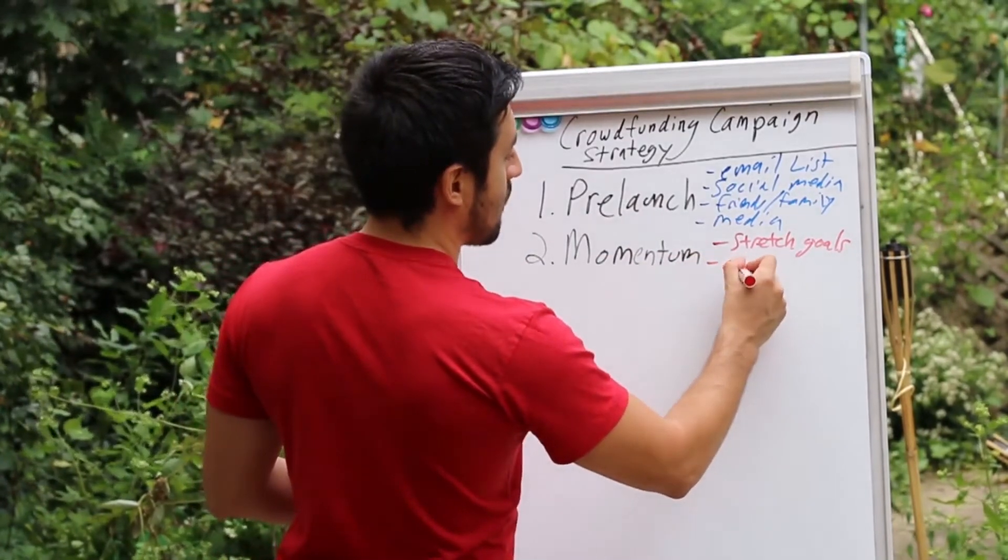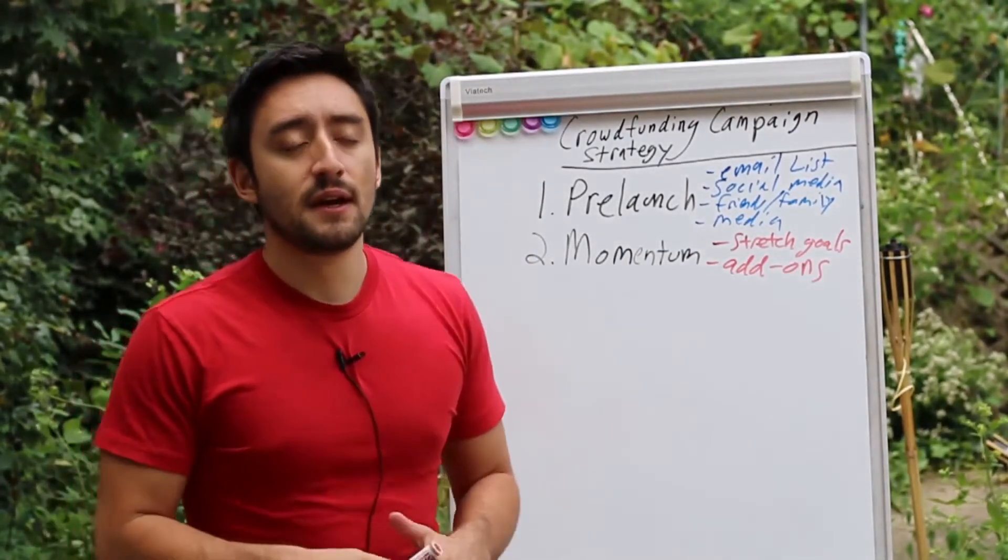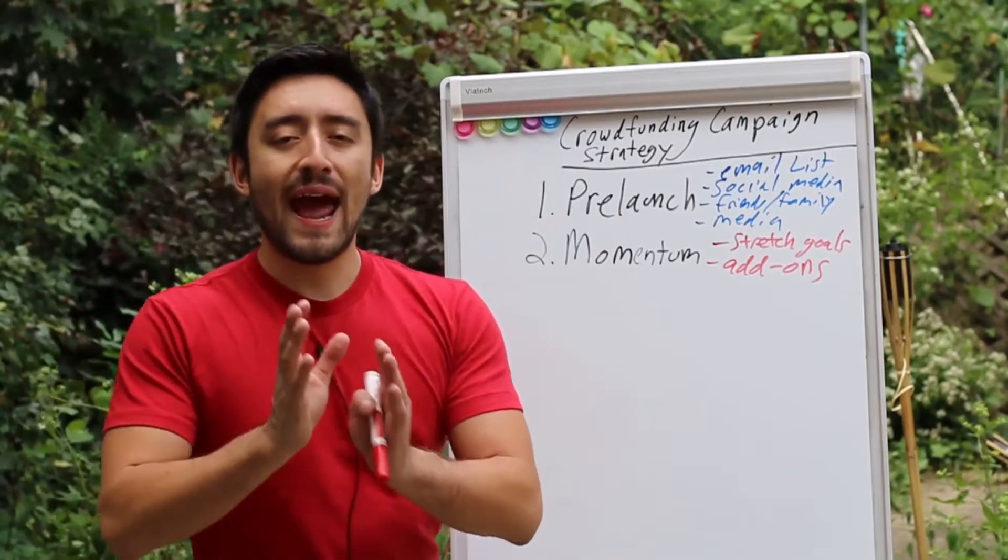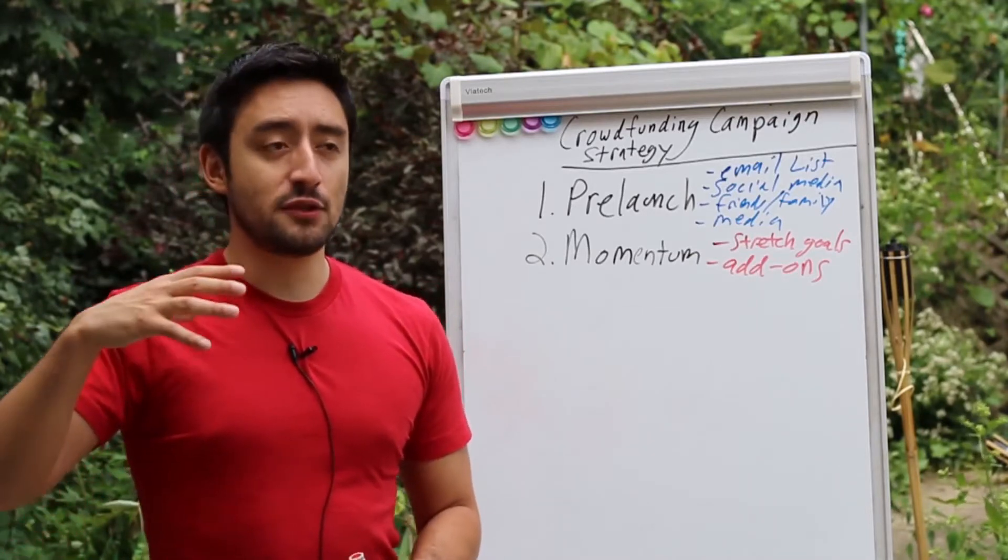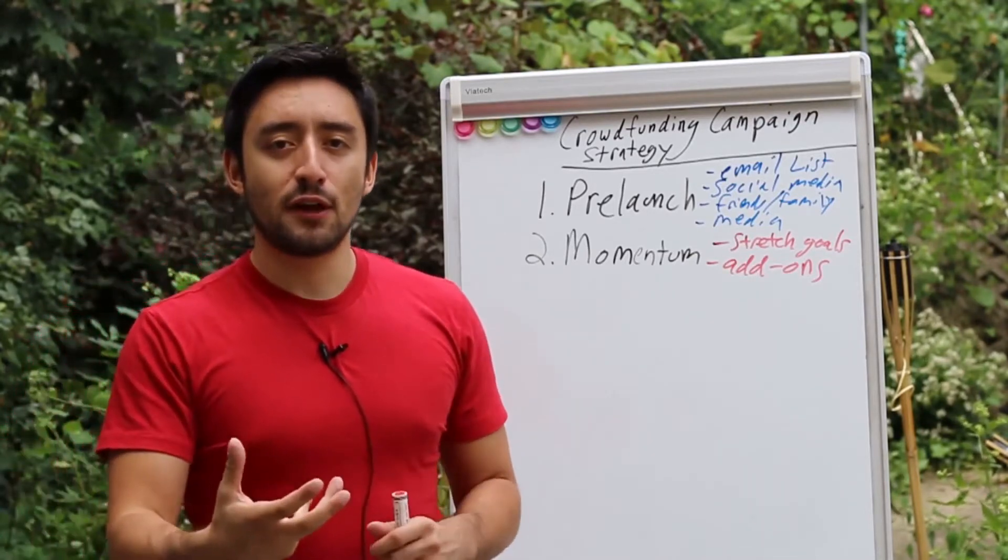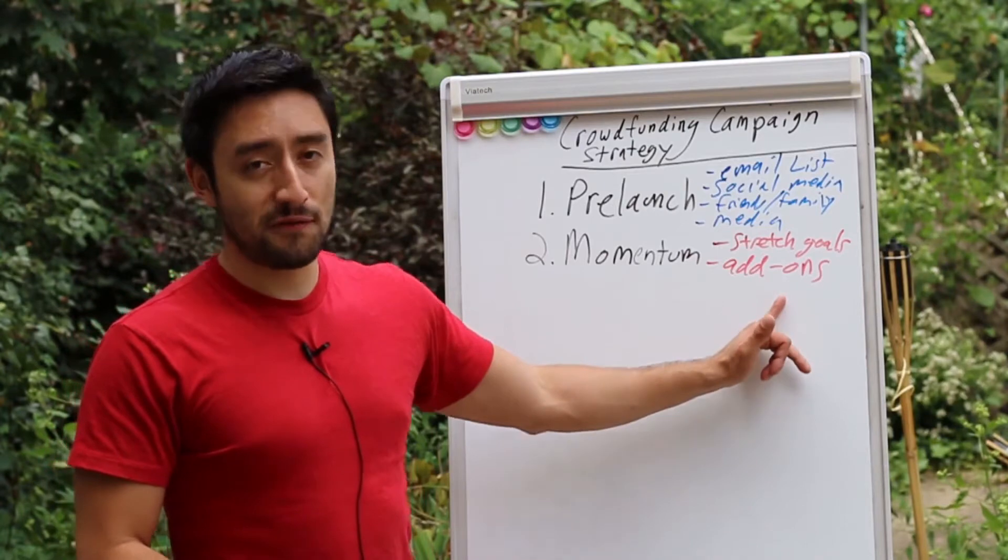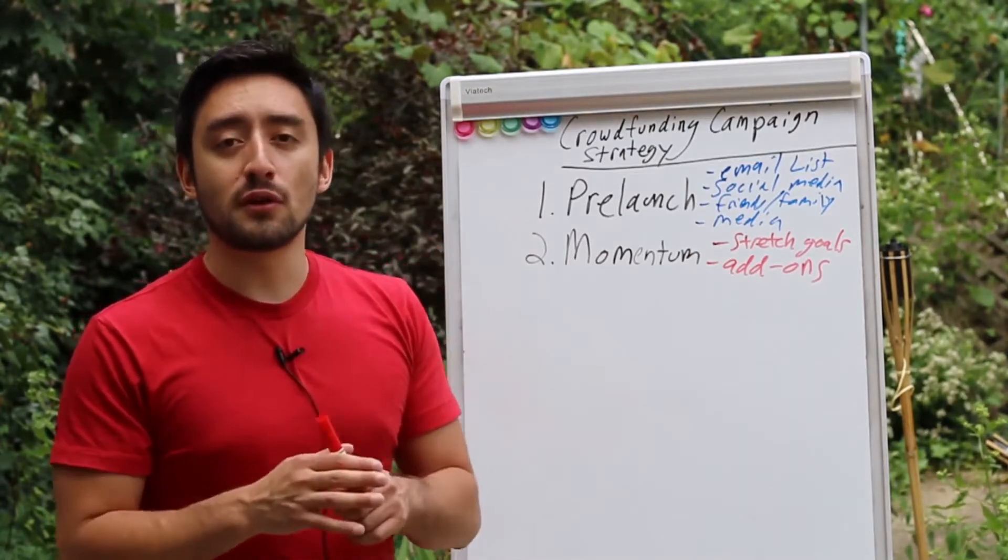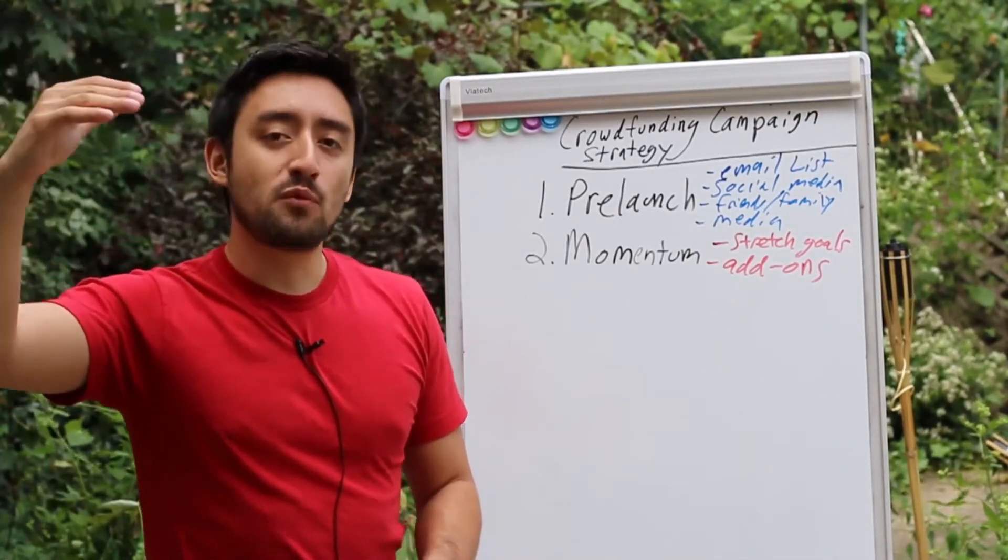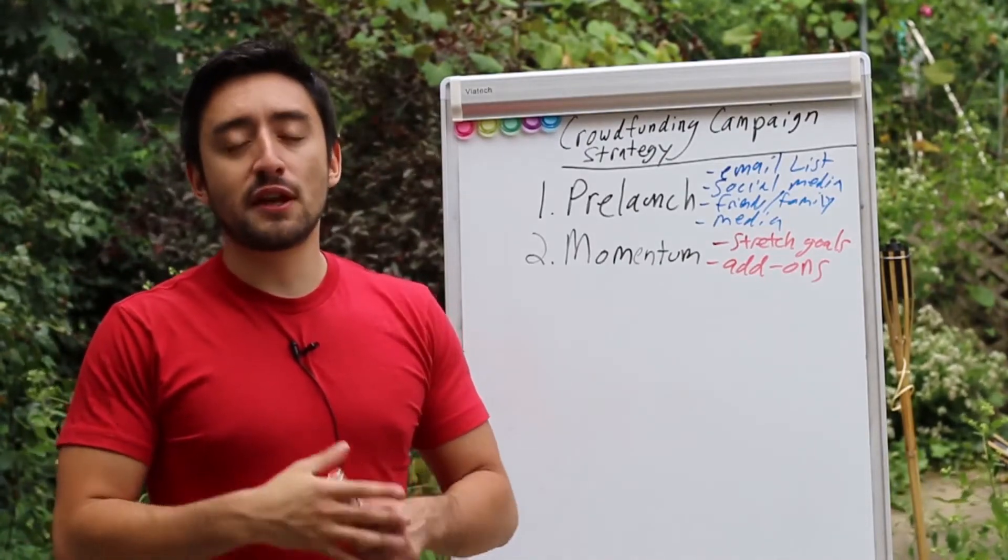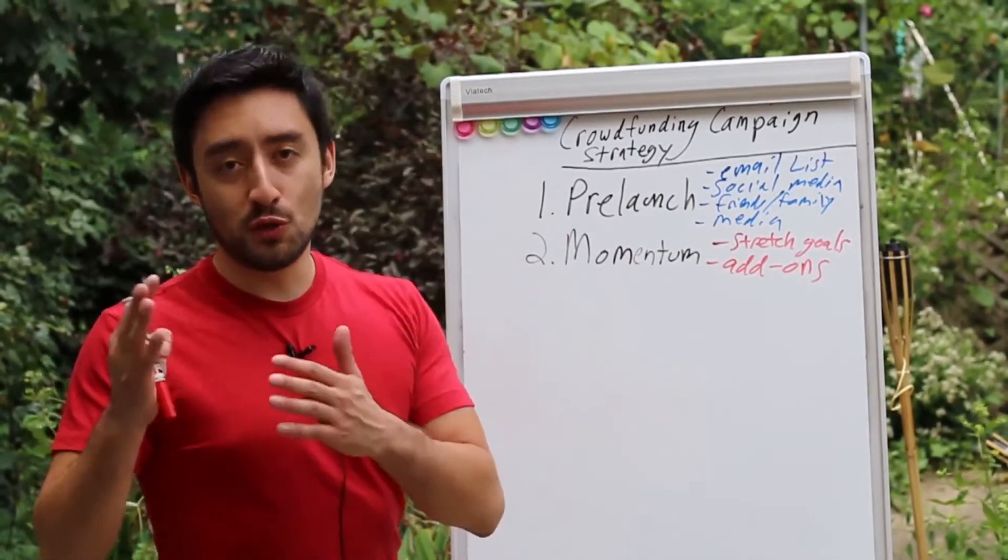Another way to maintain momentum are add-ons. Add-ons are kind of like upsells. It's something where you have a core product, and then an add-on is like an attachment to that product. It further expands the functionality of that product, or it's something that you basically tack on as an extra benefit, or something that people can actually increase their pledge and gain access to this add-on. So if you have a $25 reward tier and then you have an add-on that's $10, the person would increase their pledge by $10, and then they'll claim this add-on when you send out your survey.